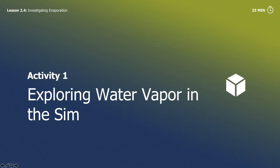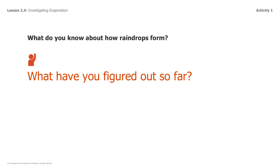The first activity you're going to be doing is exploring water vapor in a sim — an app that you are going to have a chance to use and explore. Before we get started, I want you to think about what you know about how raindrops form, what you've figured out so far in your own knowledge about how raindrops form. Keep that in mind while you do this activity.